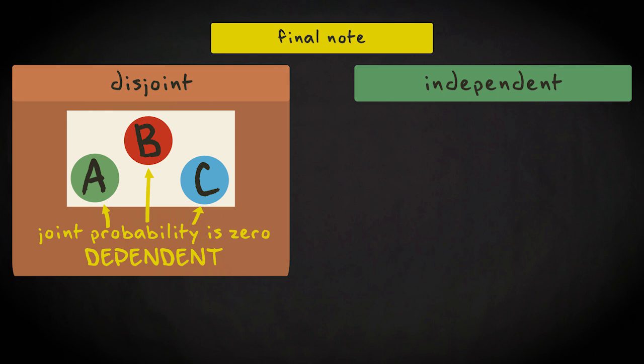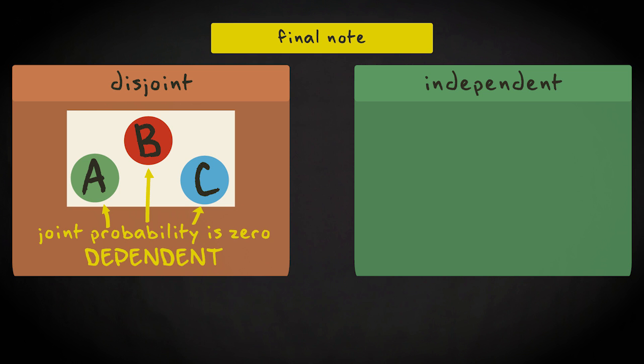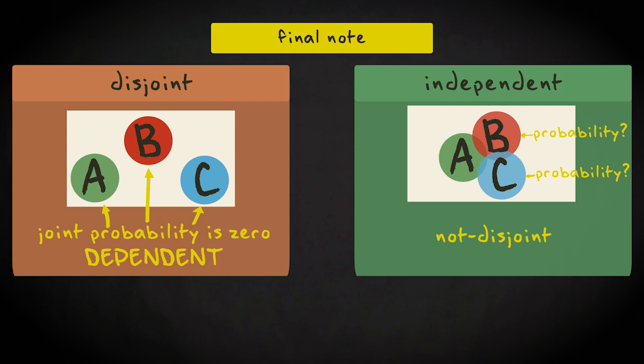Contrastingly, if events are independent, the occurrence of one event does nothing about another, and can thus also not be disjoint.